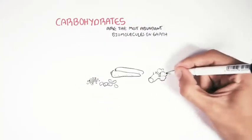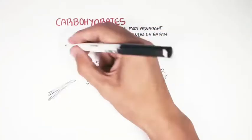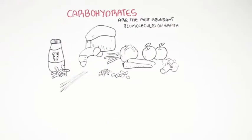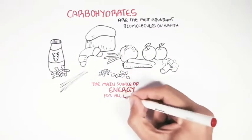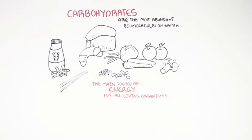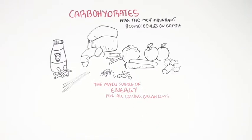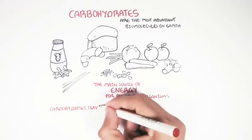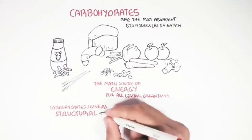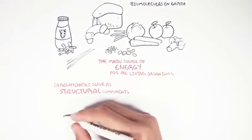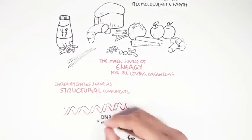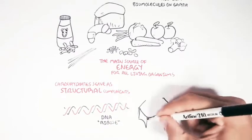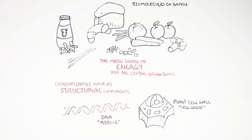Carbohydrates are the most abundant biomolecules on Earth. They are found everywhere. Carbohydrates are a major source of energy for all living organisms, such as animals and plants. But they are not only important for energy. Carbohydrates also serve as important structural components. For example, DNA contains the carbohydrate ribose, and the plant cell wall is made up of the carbohydrate cellulose.